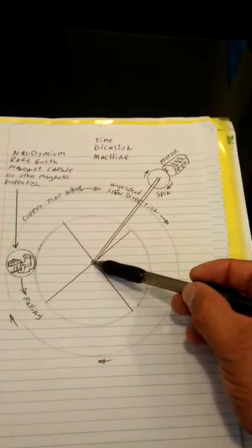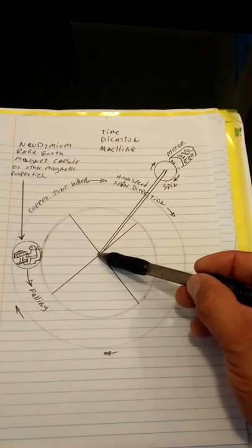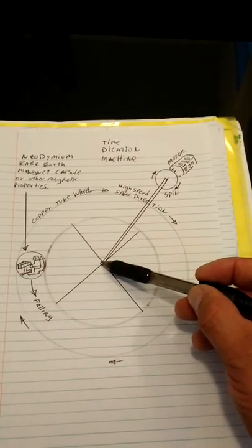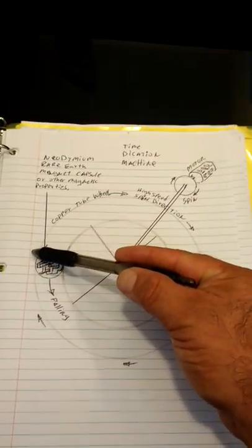Now, if you attach a motor and make it spin to this copper tubing and spin it the opposite direction at high speed, that will increase the magnetic field of this capsule.